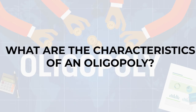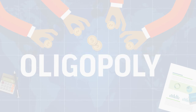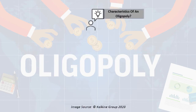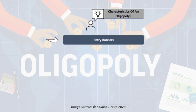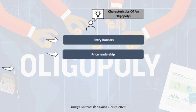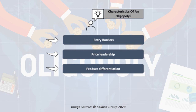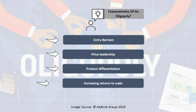Now let's have a look at the characteristics of an Oligopoly. Oligopoly has the following characteristics: entry barrier, price leadership, product differentiation, and increasing returns to scale.